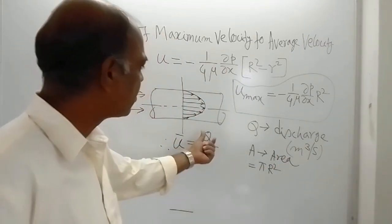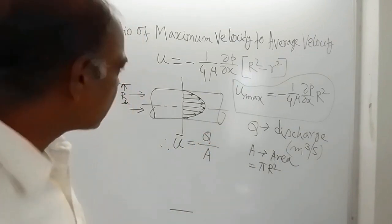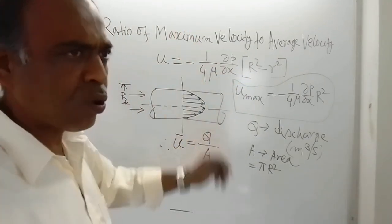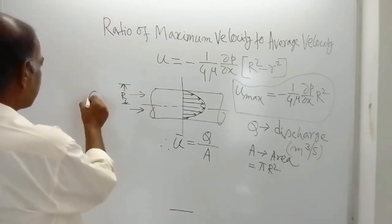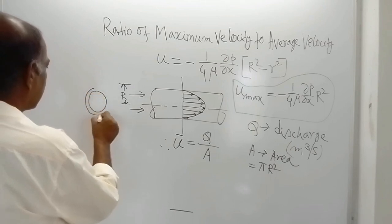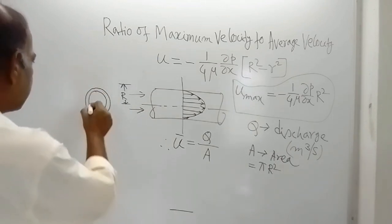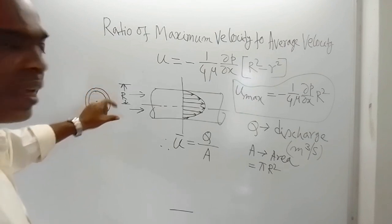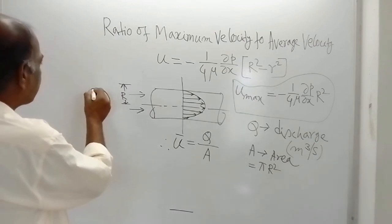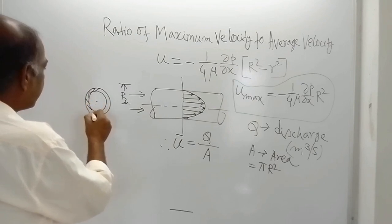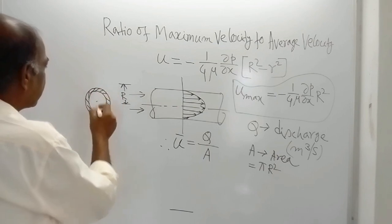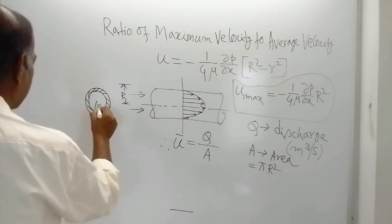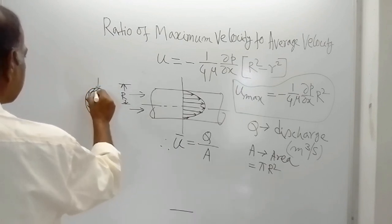Our first task is to calculate Q. Since velocity is not constant across the radius, we take one elemental ring. This ring has an inner radius of small r and a thickness of dr. The inner circle and outer circle define the annular space through which fluid flows.